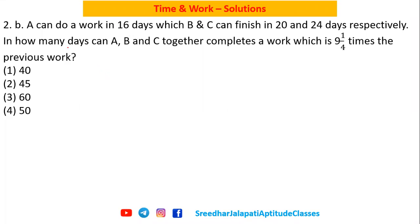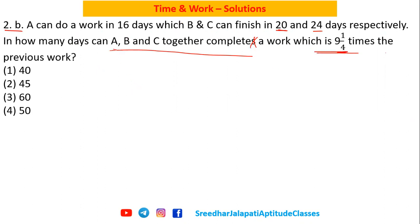Here is the solution for question number 2b from my aptitude book, from the topic called time and work. A and B can do a work in 16 days, B and C can finish it in 20 and 24 days respectively. We need to find in how many days A, B, C together can complete 9¼ times the previous work. The last part is something new; otherwise it's a very regular basic question.